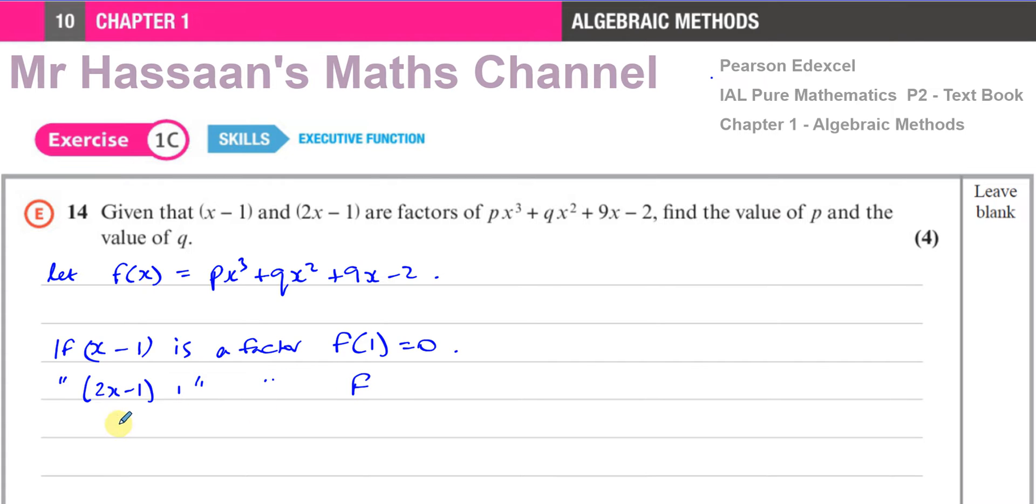And likewise, if 2x - 1 is a factor, then f, what makes this bracket 0? 2x - 1 = 0, x = 1/2. If I put 2x - 1 = 0 and solve that for x, x is going to be 1/2. So that means substituting 1/2 into this expression will also give us 0.